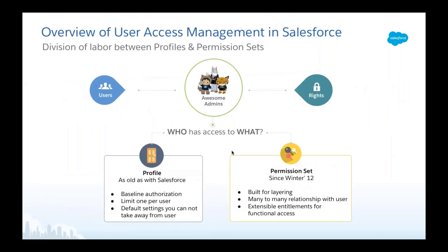Why am I saying that? I like to start from the very beginning — understanding the difference between these two features. Every user permissioning decision you make is essentially answering the question: who has access to what? I'll use my favorite analogy: it's like you have a very nice villa, and as an admin you hold the gatekeeping responsibility for ensuring your property is secure and protected — deciding which guests, or end users, are allowed to visit what areas of the house.